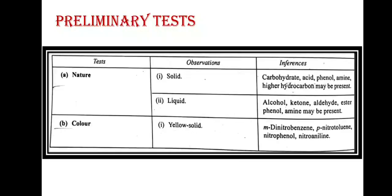The first step is the preliminary test. We will first note down the nature of the compound — whether it is solid or liquid. If it is solid, then carbohydrate, acid, phenol, amine, or higher hydrocarbons may be present. If our compound is liquid, then alcohol, ketone, aldehyde, ester, phenol, or amine may be present.